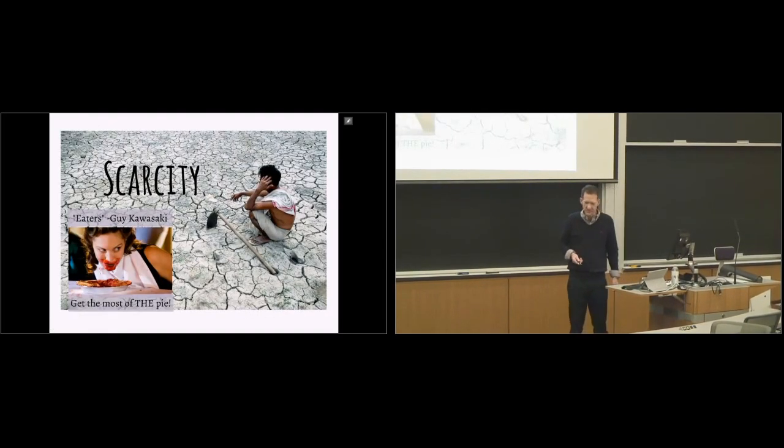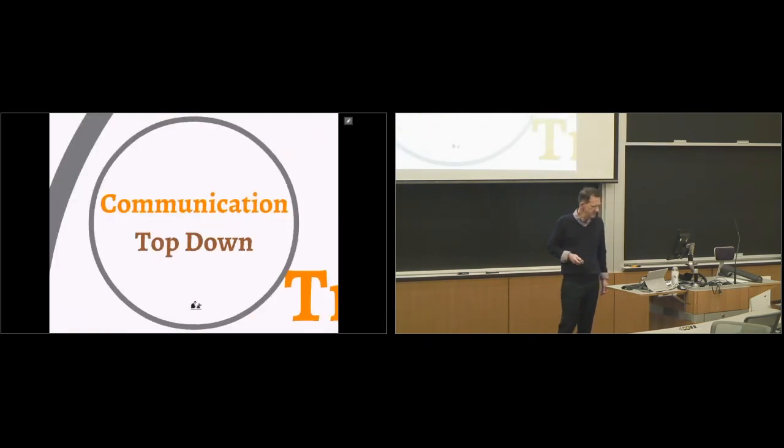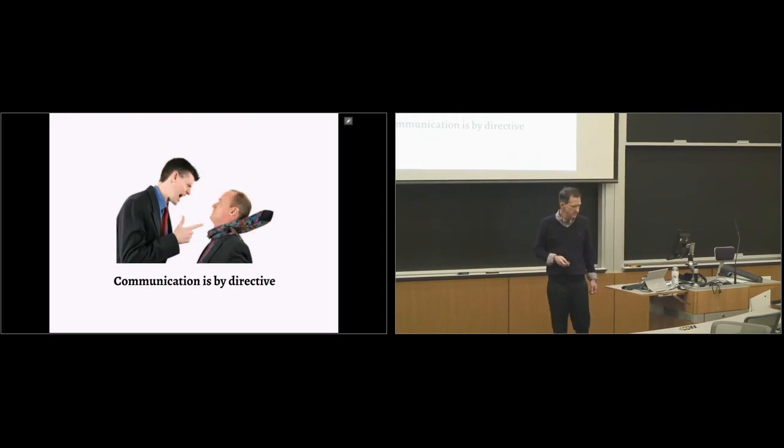I would say that it comes from a belief fundamentally in scarcity. That there is a pie and I just want my unfair share of it. I want to get as much of that as possible, because that's all there is to go around. What Guy Kawasaki describes in Enchantment as being eaters. And the communication, naturally, is top-down. It's by directive. It's typically one way.